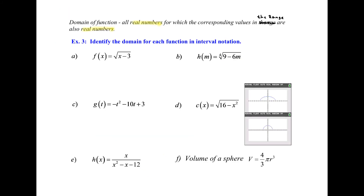Example 3 is about identifying the domain of each function in interval notation. The first one is f of x equals the square root of x minus 3. We start with all real numbers and ask if there are restrictions. You can't take the square root of a negative number, so the expression under the radical must be greater than or equal to zero. Setting x minus 3 ≥ 0 gives x ≥ 3. In interval notation, the domain is [3, ∞).